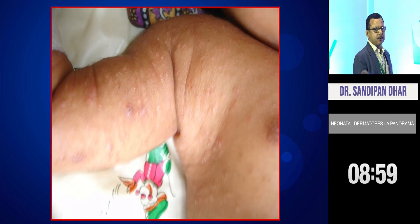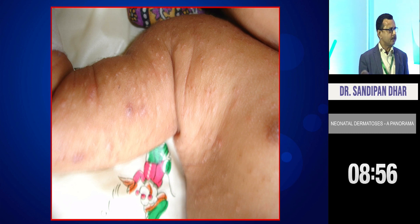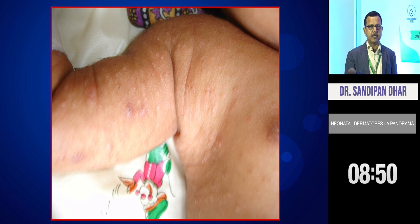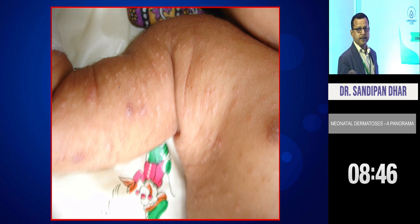This is intertrigo, also known as diaper dermatitis — a mechanical dermatitis. Cleaning and changing the diaper repeatedly so that it doesn't come in contact with urine and stool very frequently — that is the solution. Nowadays there are super-absorbent diapers which hold a large amount of urine and stool for a long period of time, which is very advantageous for the working mother.